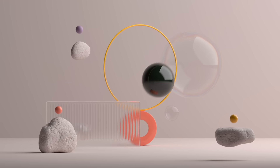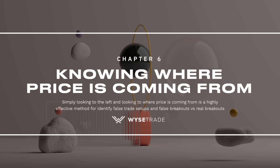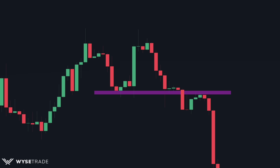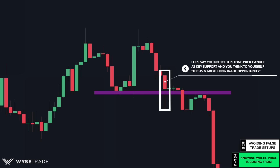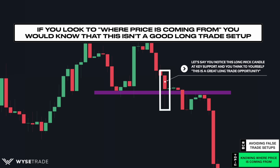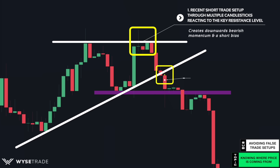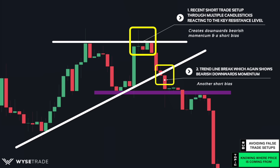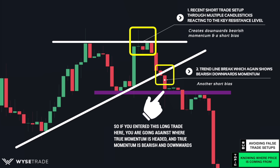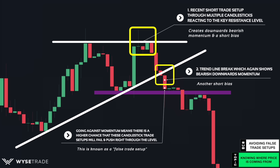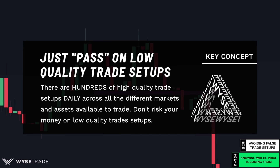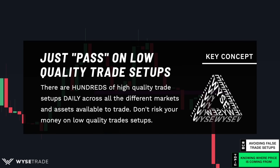Here is an advanced bonus technique: the concept of knowing where price is coming from. Let's say you notice a long wick candle at a key support level and think this is a great long trade. But if you look to the left and see where price is coming from, you would know this isn't the best setup. You had a clear recent short trade setup through a long wick candle at key resistance, followed by a trendline break, which means there is current bearish momentum. Entering a long trade here means going against where true momentum is headed. There is a higher chance this long wick candle will fail and price will push right through. The simple solution: just pass on the trade setup and move on. There are hundreds of high quality trade setups a day - no need to risk it on these low quality setups.